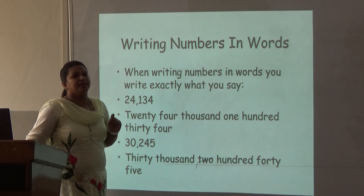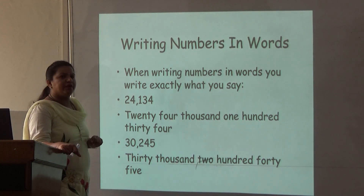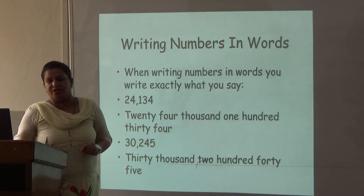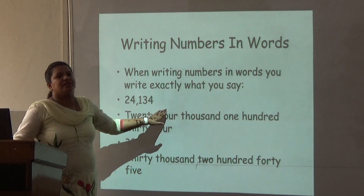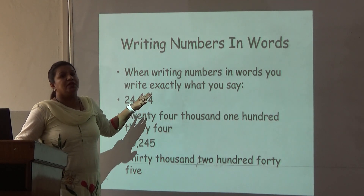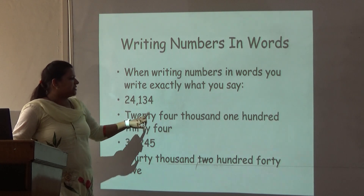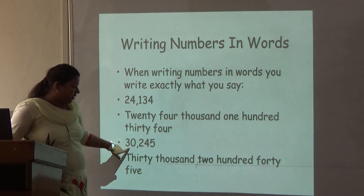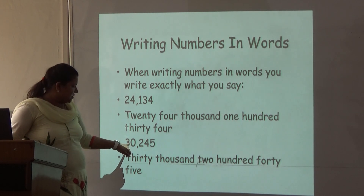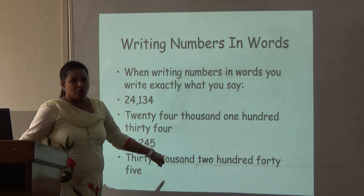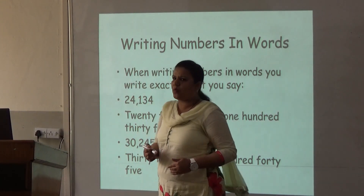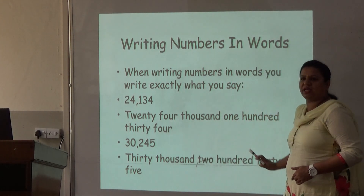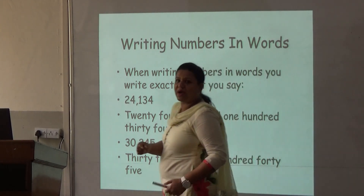Now how do we write the number in words? When writing the number in words, we write exactly what we say. 24,134 — this is the number name for the given number. Now just read the next number. This is 30,224. So when you are writing in words, how are you going to write it? Thirty thousand two hundred twenty-four. I hope I have made myself clear.